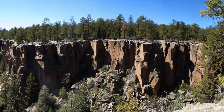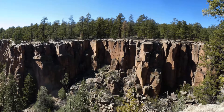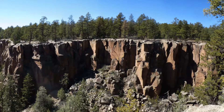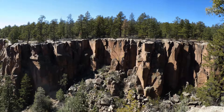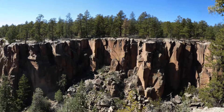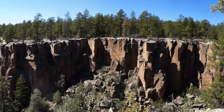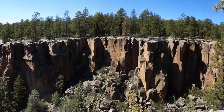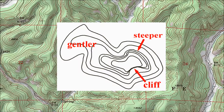Once you can tell a ridge from a valley, you need to know how to recognize a cliff. For most hikers, cliffs are impassable barriers, but if you can see them on your topographic map, you can determine a route around them. The steeper the local terrain, the closer together the contour lines. When the contour lines run together on a map, that means there's a lot of change in vertical distance with little or no change in horizontal distance. In other words, a cliff.